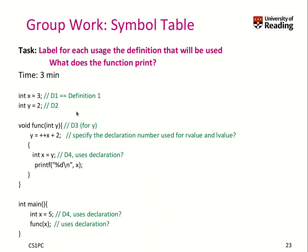So now let's practice a little bit the visibility and scope of different identifiers. In this code, label for each usage of a variable or symbol in general, like a function, the definition that will be used. And finally, the question is what does this function print?